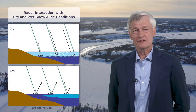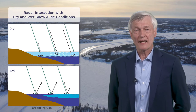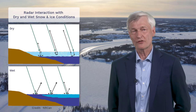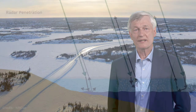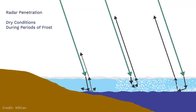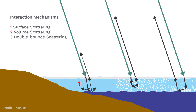These graphs illustrate the interaction of radar waves with snow and ice that are respectively dry due to freezing conditions and wet due to thawing conditions. During periods of frost, incident radar waves penetrate the upper layer of the snow and ice complex and can interact with underlying structural components such as the ice-water interface, bubbles and cracks. Accordingly, the radar return signal of dry ice results from one or more of the following interaction mechanisms: surface scattering, volume scattering, and/or double-bounce scattering.